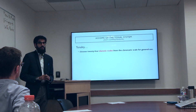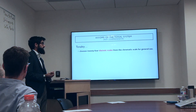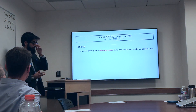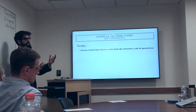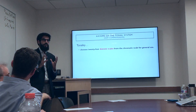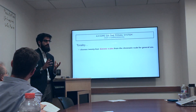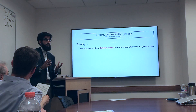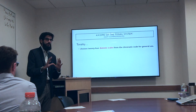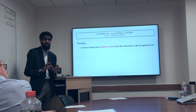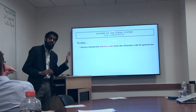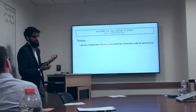Tonality chooses 24 diatonic scales from the chromatic scale for general use. A diatonic scale is basically a subset of the chromatic scale — instead of choosing all 12 pitches, you choose a specific subset. There are many ways to do this; it's actually a combinatorics problem. The diatonic scale is a very specific one, and even with that imposition there are a number of ways to create it.